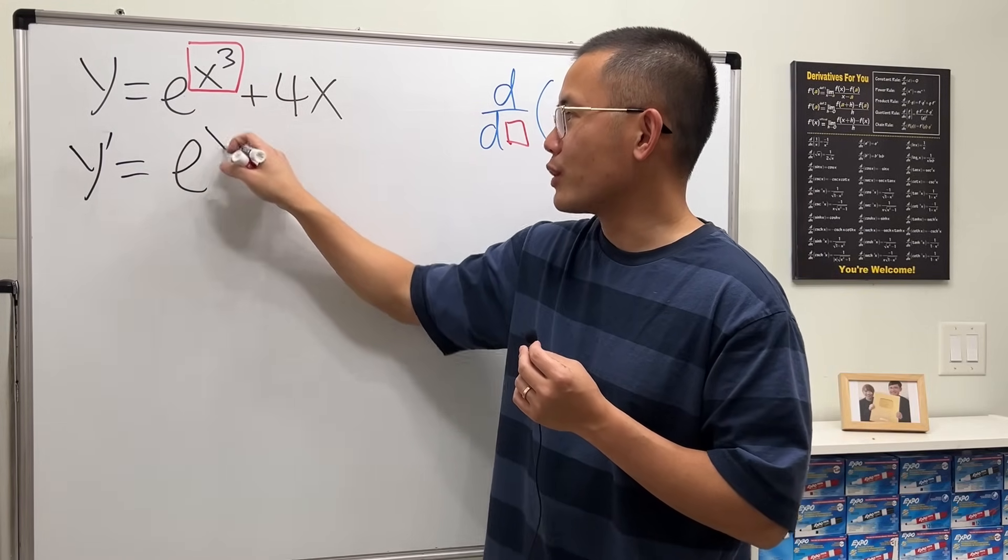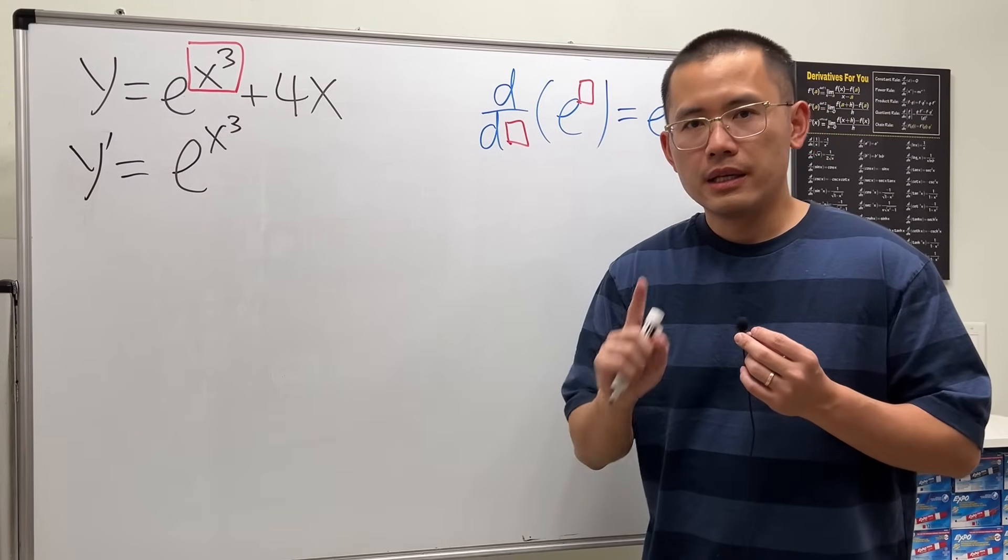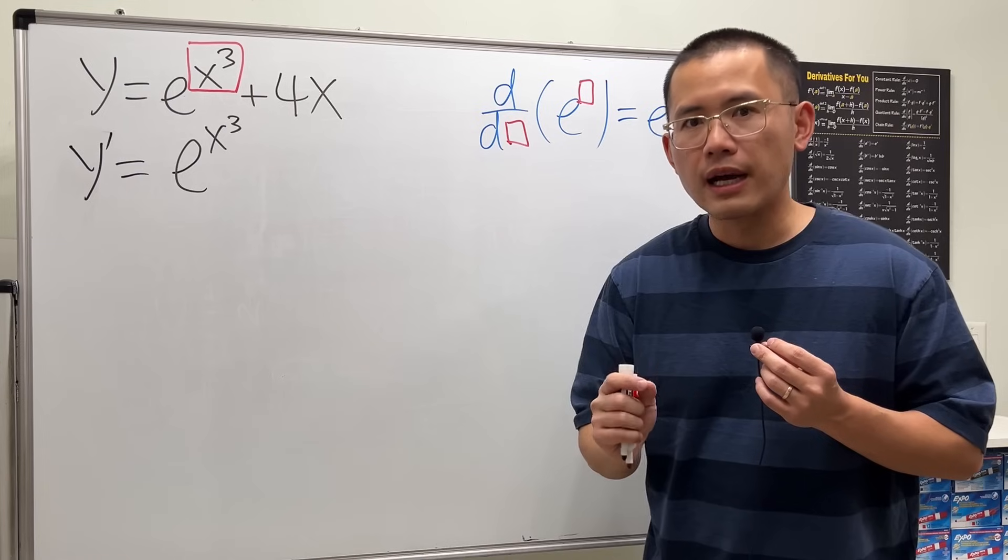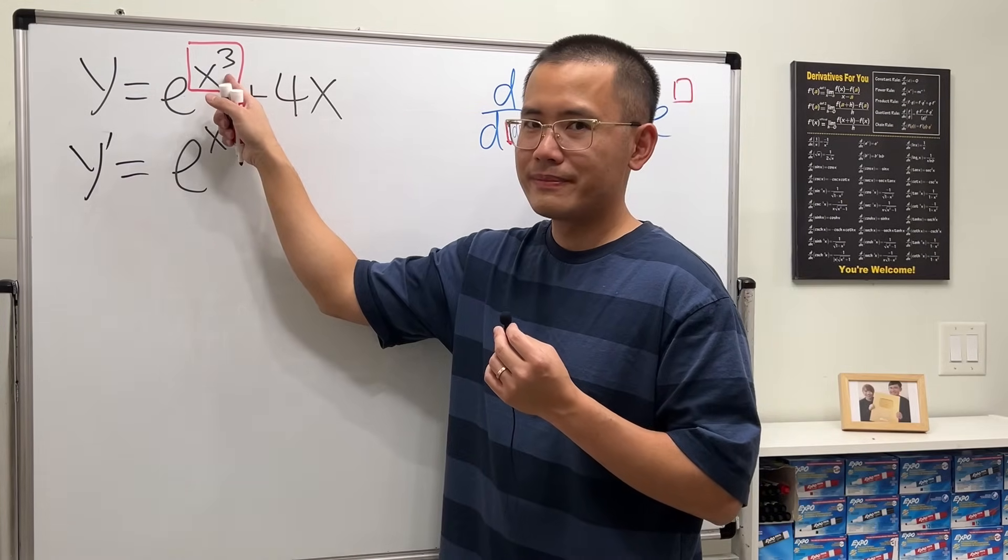e to the box and of course write down whatever is inside the box. Then the chain rule is the part where you multiply by the derivative of the function in the box. What's the